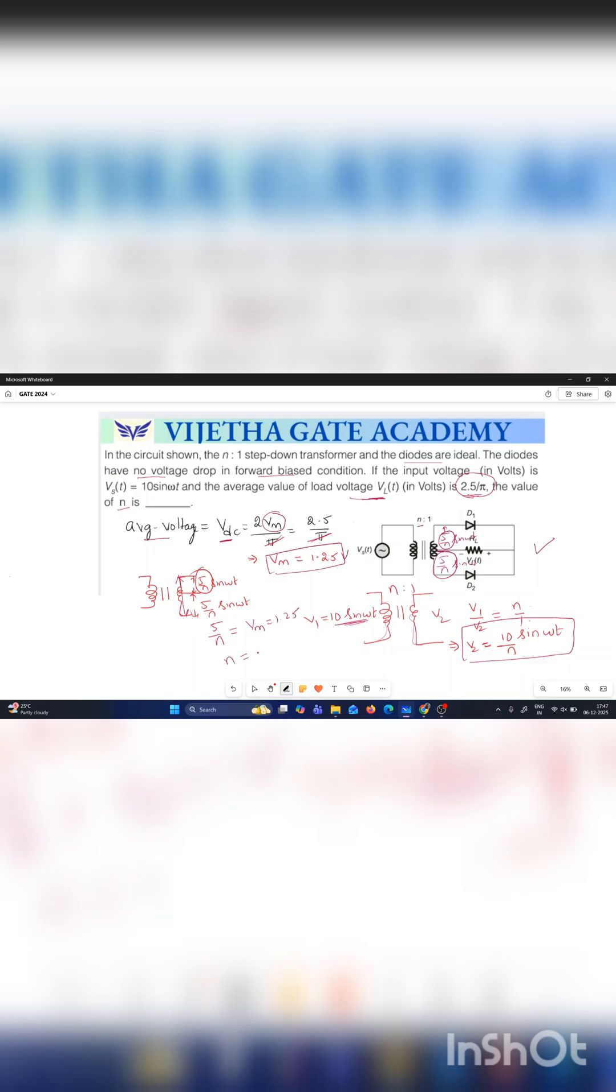So what is the value of n? 5 by 1.25, which is the answer, is 4. So the number of turns in this question is 4 to 1. The n value is 4. In this question several options are given: 4, 8, 12, and 16. Out of those we have to select the 4.